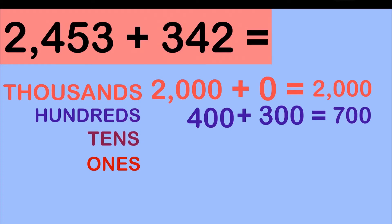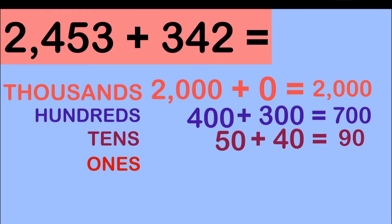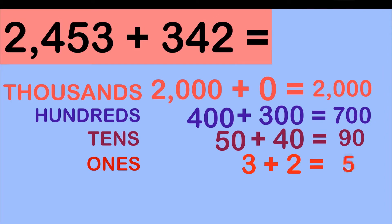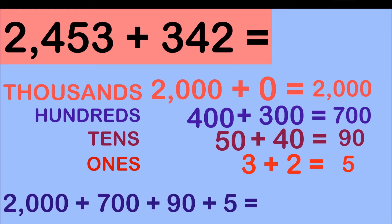How about at the tens place? At the tens place, we have digit 5, and its value is 50. While on the second number, we have digit 4, and its value is 40. So if we add them together, 50 plus 40 is equal to 90. Let's proceed at the ones place. At the ones place, we have digit 3, and its value is 3. While on the second number, we have digit 2, and its value is 2. Let's add 3 plus 2, which is equal to 5. So now, let's add up all the values that we got. 2,000 plus 700 plus 90 plus 5 is equal to 2,795. So the sum of 2,453 and 342 is 2,795.